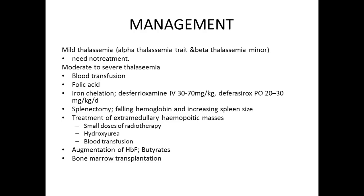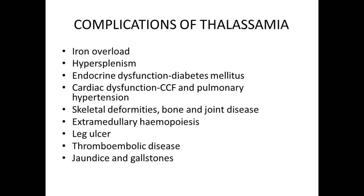The complications of thalassemia include iron overload leading to diabetes mellitus, congestive cardiac failure, and pulmonary hypertension. Due to extramedullary hematopoiesis, patients develop skeletal deformities and bone and joint disease. Hemolysis causes jaundice, gallstones due to pigment stones, pulmonary phenomena, and due to reduced immunity patients are susceptible to infections. These are the main complications of thalassemia.